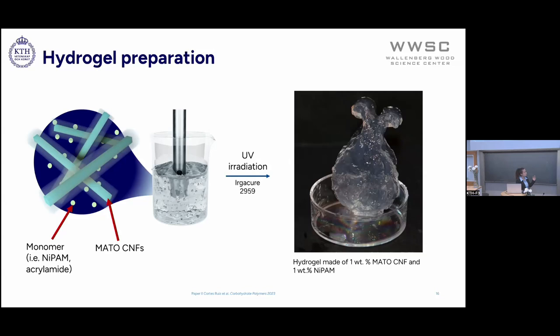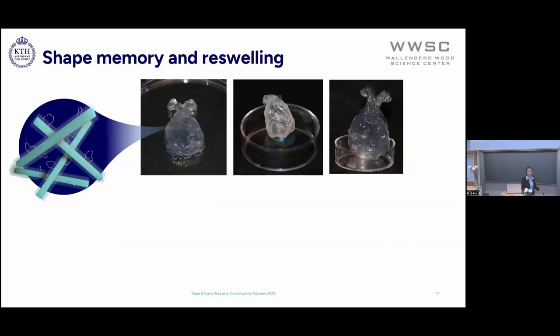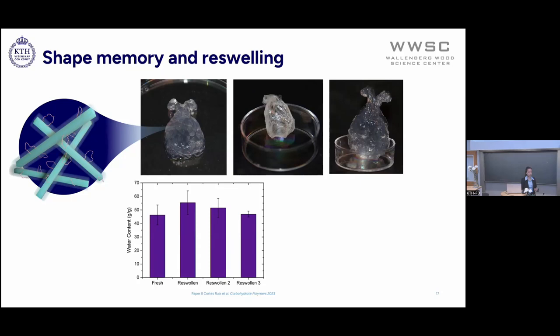This hydrogel was made with only one weight percent CNF and one weight percent monomer, but it still has very nice properties. For instance, it can dry and reswell in exactly the same shape that it was made in. In fact, I tried multiple times drying and reswelling and measured the water content at each point, and it was able to reswell to at least the same water content as the first time it was made.